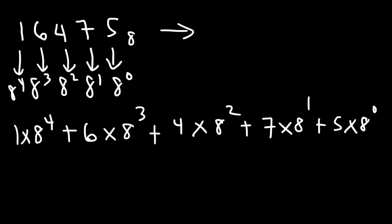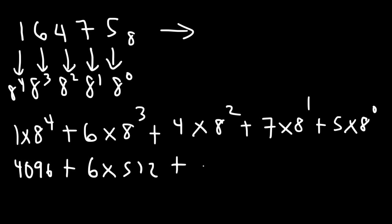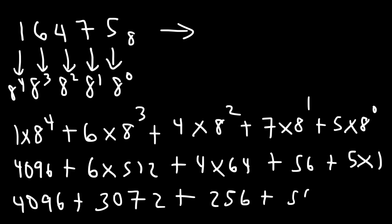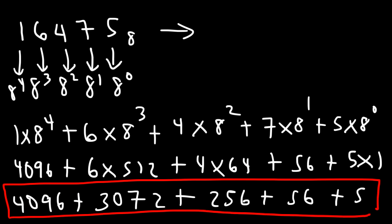8 raised to the fourth power is 8 times 8 times 8 times 8, which is 4096. 8 to the third is 512, and 8 squared is 64. 7 times 8 is 56, and 8 to the 0 is 1. So we have 4096, and then 6 times 512 is 3072, and 4 times 64 is 256, then plus 56 plus 5. Adding up these five numbers, the sum comes out to 7,485 in the base 10 system.